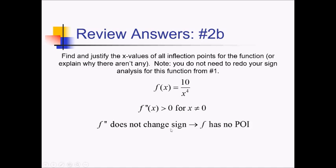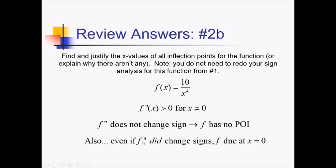Just as a follow-up: even if f double prime did change signs at x equals zero, the original function 10 over x to the fourth is undefined at x equals zero. So you still would not have a point of inflection because you would not have a point on the function at x equals zero.